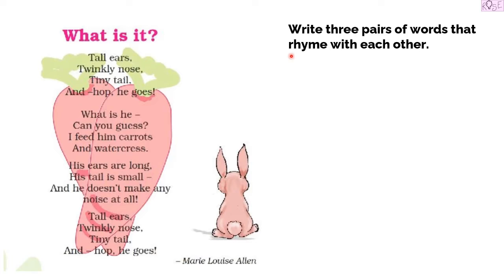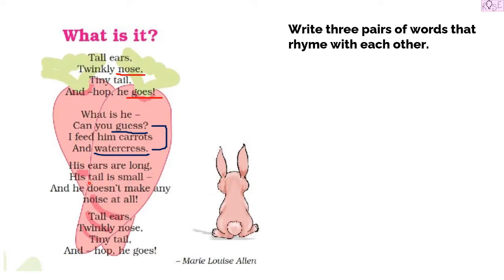Now let us see what we have to do: write three pairs of words that rhyme with each other — our favorite activity! In each paragraph there are some rhyming words. In the first paragraph, 'tall ears, twinkly nose, tiny tail, and hop he goes,' the rhyming pair is 'nose' and 'goes.' Next, in the paragraph 'what is he, can you guess, I feed him carrots and watercress,' the rhyming words are 'guess' and 'watercress.'